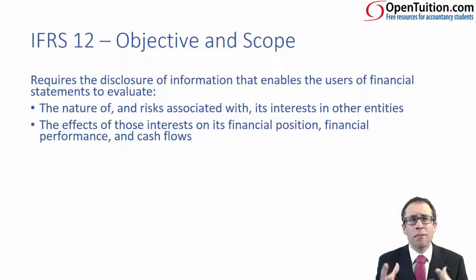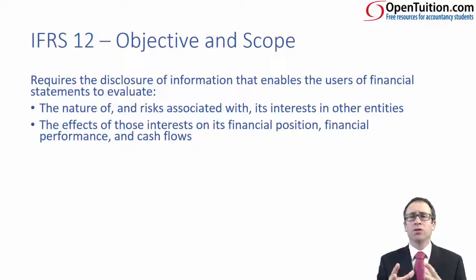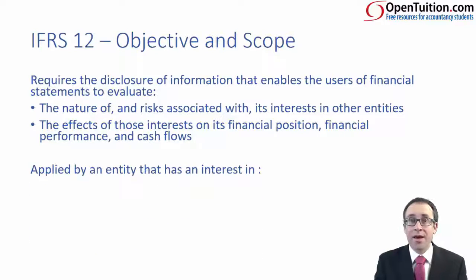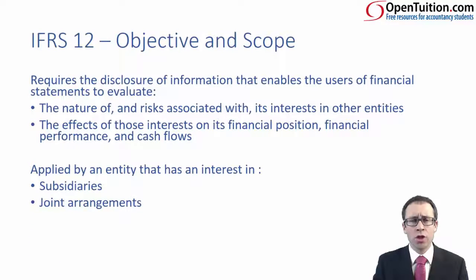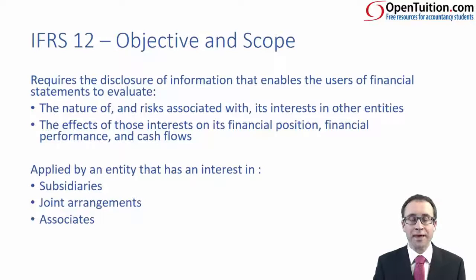Equity accounting doesn't give you any information or breakdown about the assets, liabilities, income and expense, or the cash flows of the joint venture or of the associate. So essentially, all the standard wants to do is give us extra disclosure about the joint venture and the associate, and explain why you have treated it as such. The standard applies if you have an interest in a subsidiary — so if you have control — also if you have a joint arrangement with joint control under a joint venture or a joint operation, or if you have an associated company. If you have none of those interests in any of the entities, then you do not need to worry about this accounting standard.